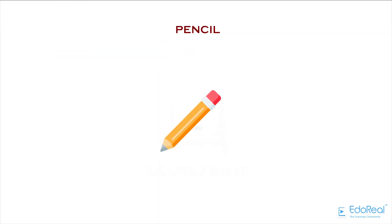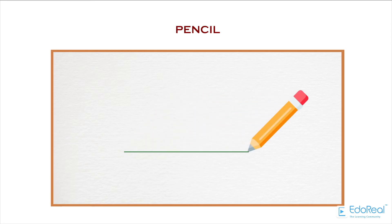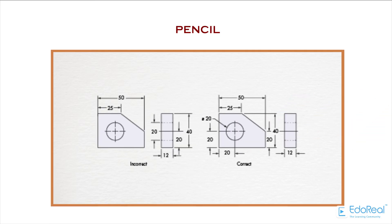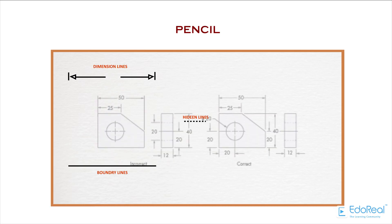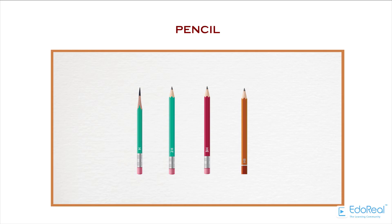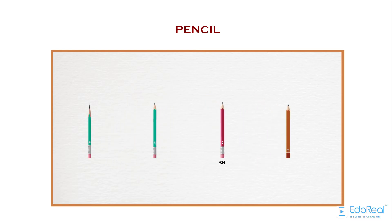Pencil is used to draw on paper. Any type of pencil is not suitable for drawing. There are some limitations. The drawing appearance should be very neat and understandable. Every line of the drawing should indicate its importance. The following pencils are used in engineering drawings: 3H pencil, 2H pencil, H pencil, HB pencil.